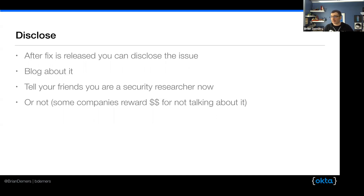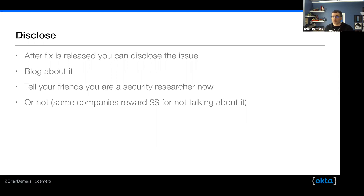Now that we've reported the issue, it's been fixed and released to the public — it's finally time to disclose the issue. This is the first time that the information has been released to the public. Typically the vendor will handle all of this — getting the CVE ID, attaching it to the vulnerability, describing it — all of that falls on the vendor, not on somebody reporting it. All you do is essentially that initial contact, maybe some follow-up information if somebody is having trouble reproducing the bug. Now, if you want, you can go talk about it — you can go share what you've learned, blog about it, tell your friends. Or not — some places will actually pay you not to talk about it and not to publicly disclose the issue.